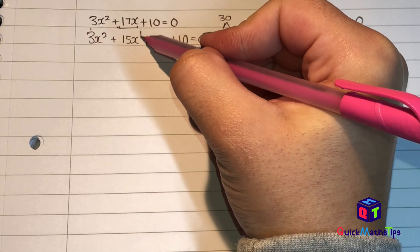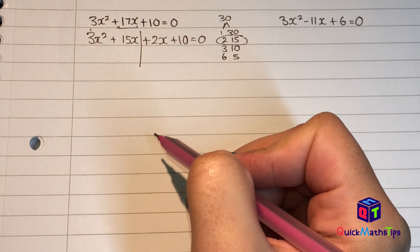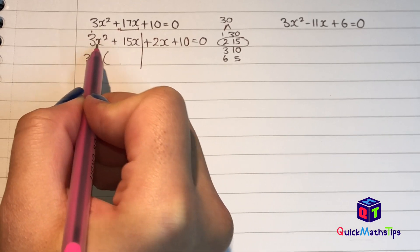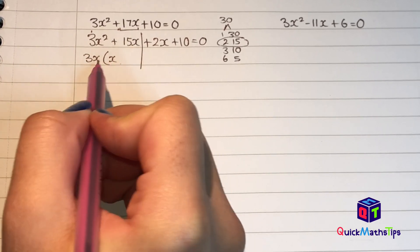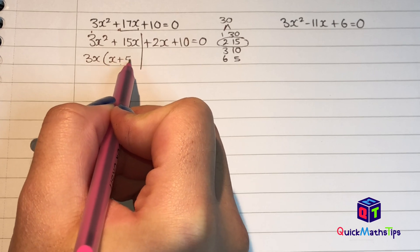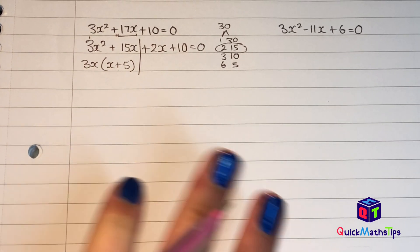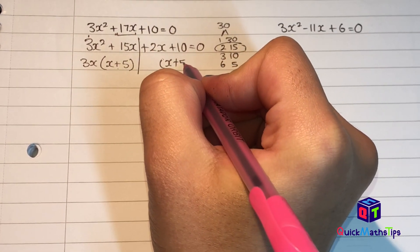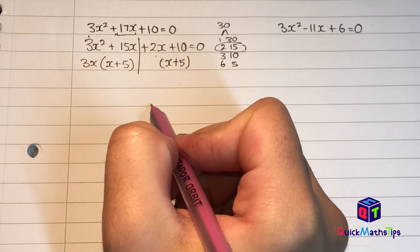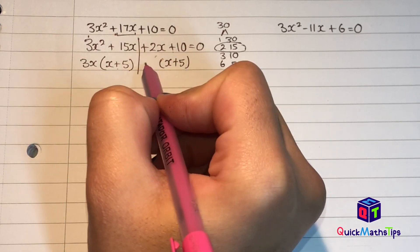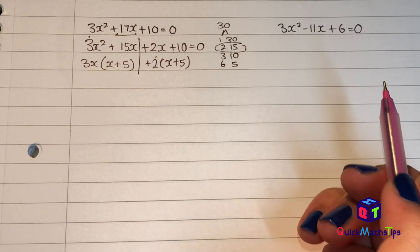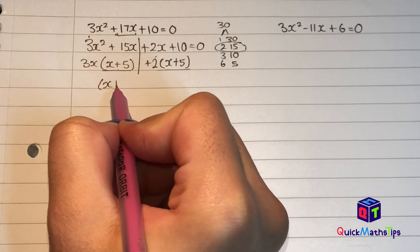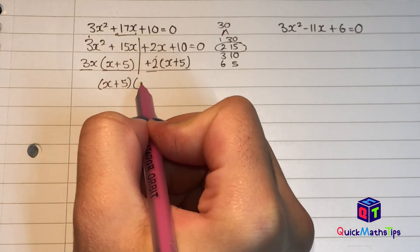I split this right in the middle and factorise both sides individually. On this side I can pull out 3x. 3x squared divided by 3x gives me x, and 15x divided by 3x gives me plus 5 — so x plus 5 inside my brackets. Because I have x plus 5 here, I have to have x plus 5 on the other side. 2x divided by x gives 2 and 10 divided by 5 also gives 2, so plus 2 on the outside. My final two brackets are the repeated one, x plus 5, and the outside stuff, which is 3x plus 2.